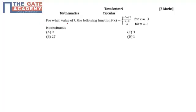The question is: for what value of lambda is the following function f(x) continuous? Where f(x) equals x cubed minus 27 divided by x minus 3 for x not equal to 3, and f(x) equals lambda for x equal to 3.